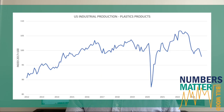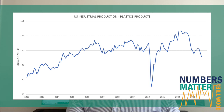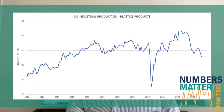It's the industrial production index for plastics products in the US. Just a couple of words about how to interpret this data: it's an index based on the average month in 2017 equaling 100. So anytime the line falls below 100, you're producing less than the average month in 2017. It measures volume of output — not pricing, not value, no dollars — just volume, and it's seasonally adjusted.